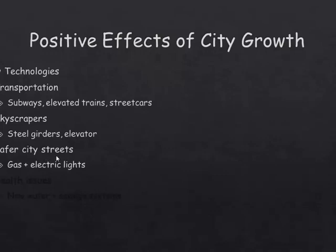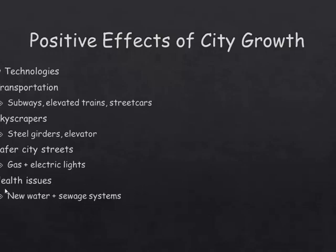We had safer city streets because we began using less gas and more electric lights. The old way was kerosene lamps, which caused fires if they broke. So we began using mostly electric lights on city streets. And for health issues: we needed to clean up the water supply, make sure it was safe to drink, and set up sanitary sewers so that waste didn't get into the drinking water. So along with the negatives, there were plenty of positives too.